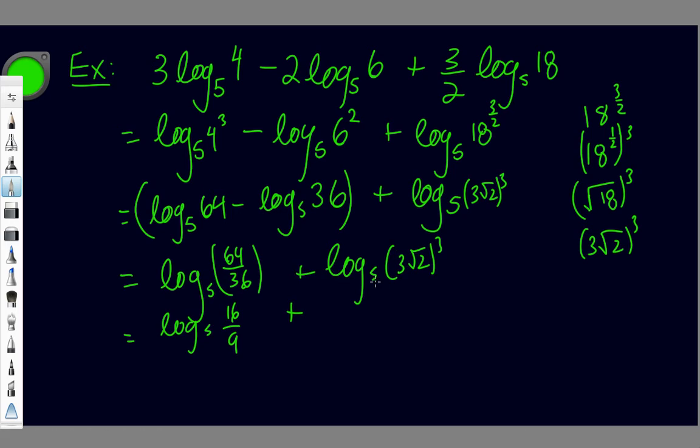So log_5(16/9) plus this guy can simplify a little bit. It's going to be 3√2 times 3√2 times 3√2 - that's what that actually means. If you multiply these two roots together, you're going to get root 4, which is 2. So I have 3 times 3 times 3 times 2, which is 54. And then I just got the root 2 left. So this whole part here equals 54, and then I just got the root 2 left. So now I can use my rules of multiplying logs: log_5(16/9 times 54√2).